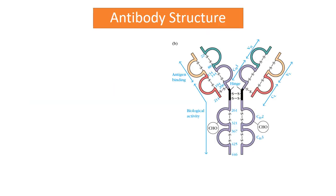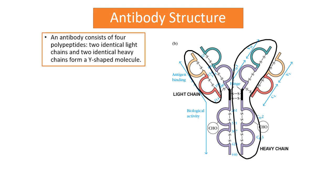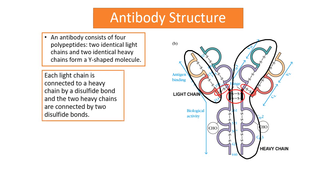This is the structure of a typical antibody. All immunoglobulins are composed of four polypeptide chains: two identical light chains (the smaller ones) and two identical heavy chains forming a Y shape (the longer ones). Each light chain is connected to a heavy chain by a disulfide bond, and the two heavy chains are connected by two disulfide bonds.